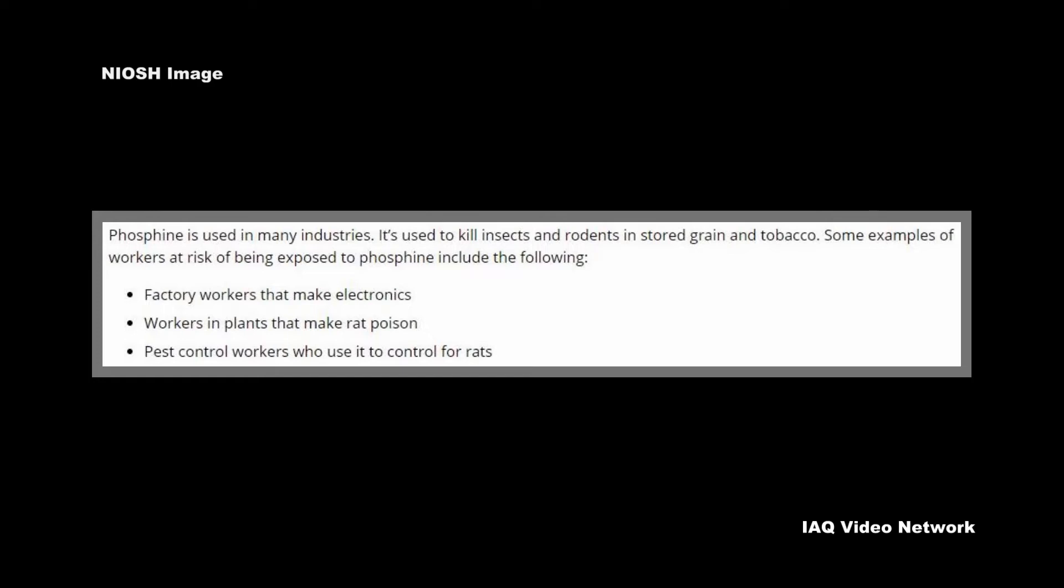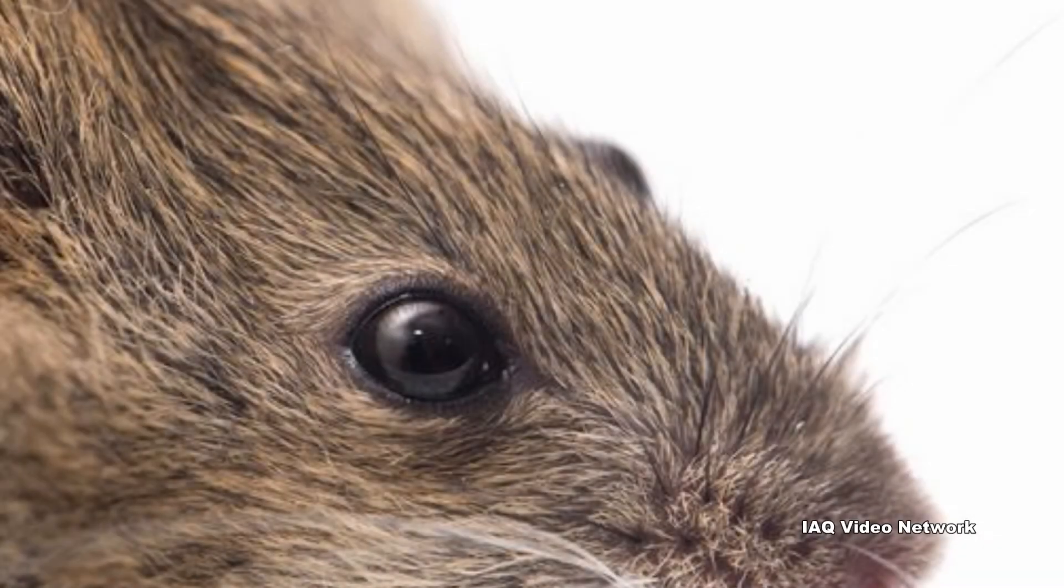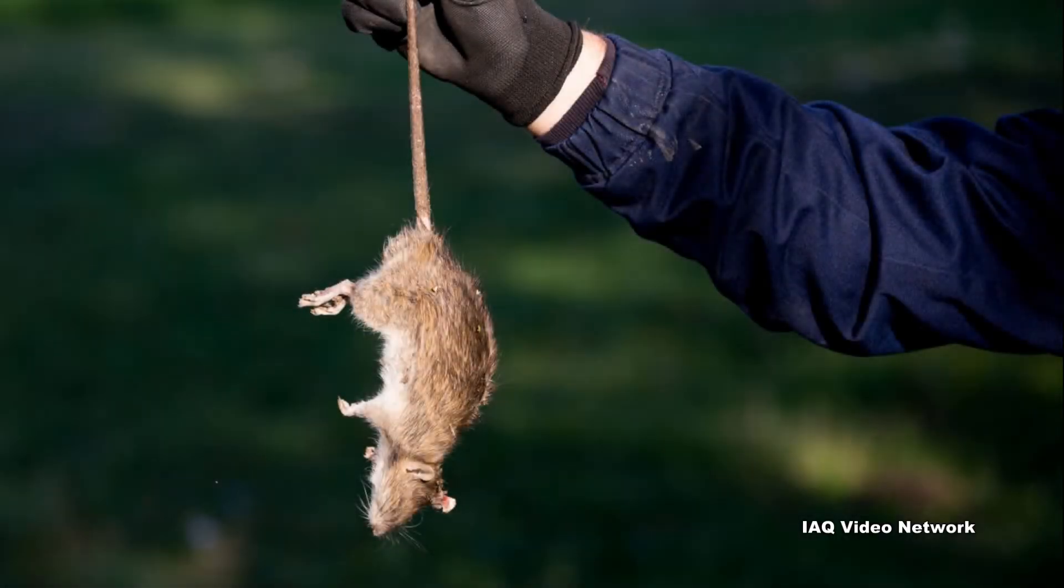Some examples of workers at risk of being exposed to phosphine, according to NIOSH, include factory workers that make electronics, workers in plants that make rat poison, and pest control workers who use it for the control of rats.